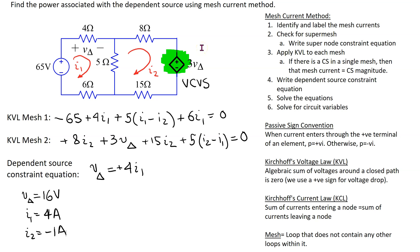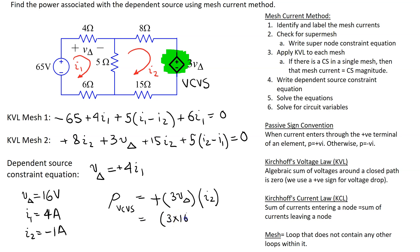Once the equations are solved, we can find the power associated with the dependent source. Power equals voltage times current. The voltage is the magnitude of the dependent voltage source, which is 3*v_delta, and the current through the source is i2. Since i2 enters the terminal marked plus, we use a positive sign. Substituting: 3 times 16 times minus 1 amp gives minus 48 watts, meaning the dependent source is supplying power.